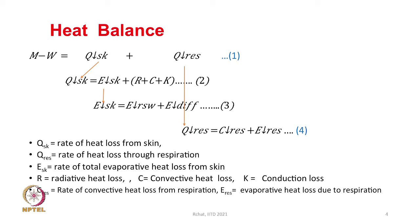R is the radiative heat loss through radiation. C is the convective heat loss, as air blowing over the skin takes away heat. K is the conduction loss — air is a poor conductor, so some heat is lost by conduction even though it is very very low. CRS is the rate of convective heat loss from respiration, and ERS is evaporative heat loss due to respiration.